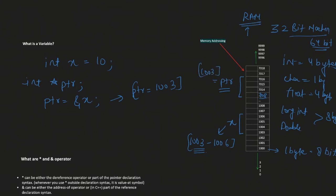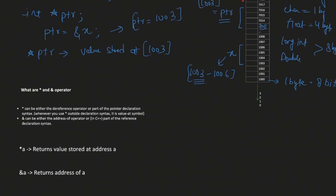In a real system, memory addresses are hexadecimal values, not simple integers. When I do ptr = &x, this gives me the address of x and that gets stored inside ptr. Now, how can I retrieve the value? If I do *ptr, this gives me the value stored at address 1003, which equals 10 — the value of x. The asterisk here can be confusing alongside &, so let's look at this nomenclature.